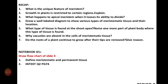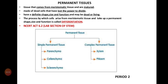Next, we will move on to the permanent tissues. Till now we have learned about meristematic tissues. Next we will move on to permanent tissues. First we will see the characteristics of permanent tissues and then we will go for classification.